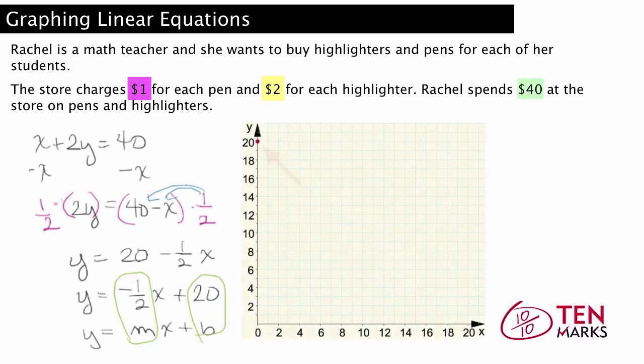First, place the Y-intercept, which is 20, on the Y-axis. Next, use the slope to count up and over. Remember, the slope represents rise over run, or the amount you go up or down over the amount you go right or left from a given point already on the graph.